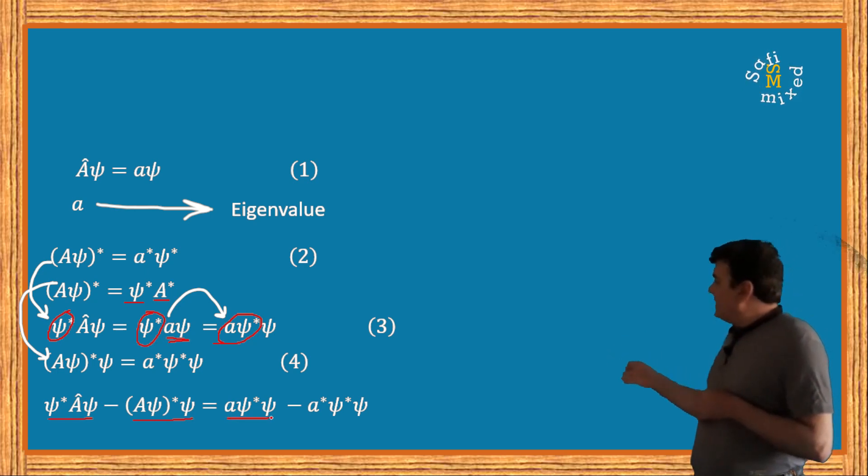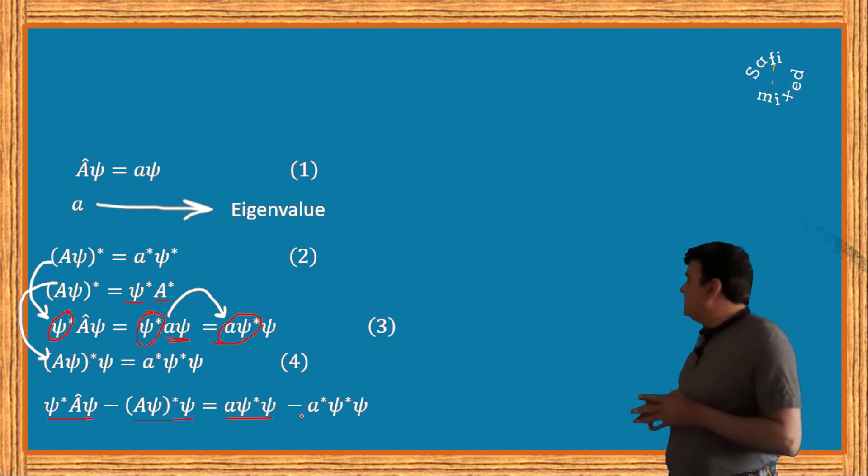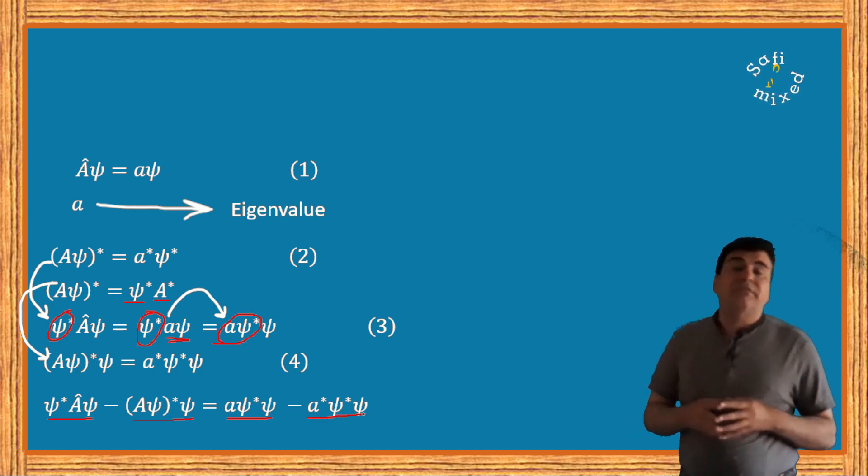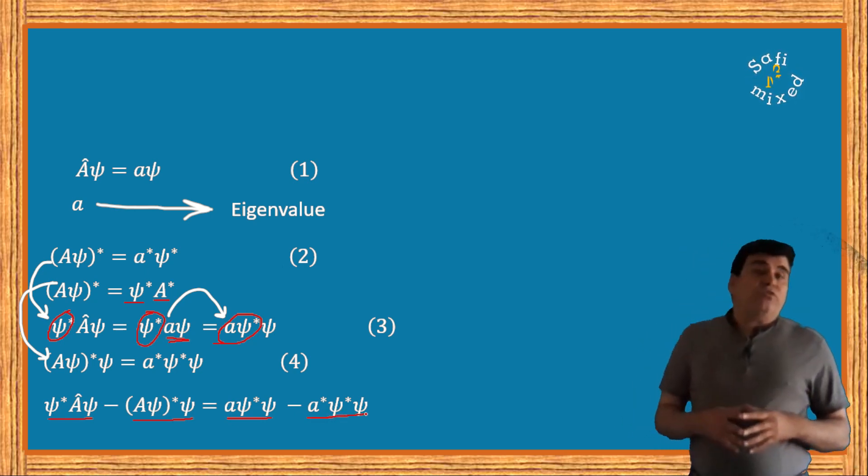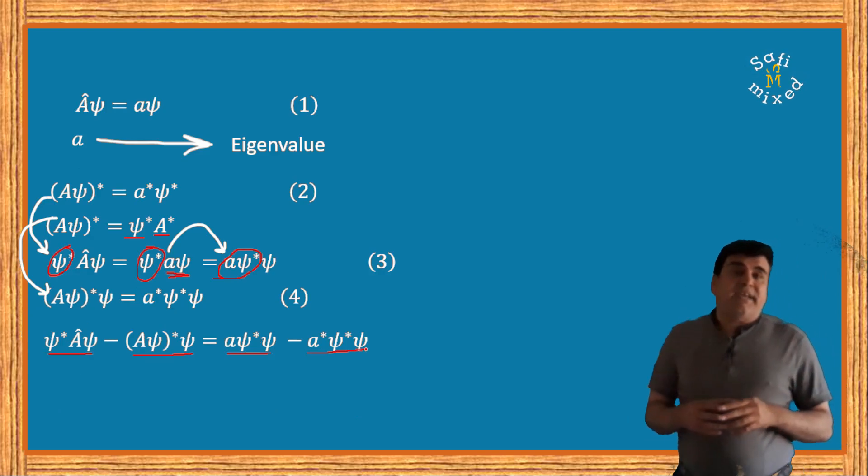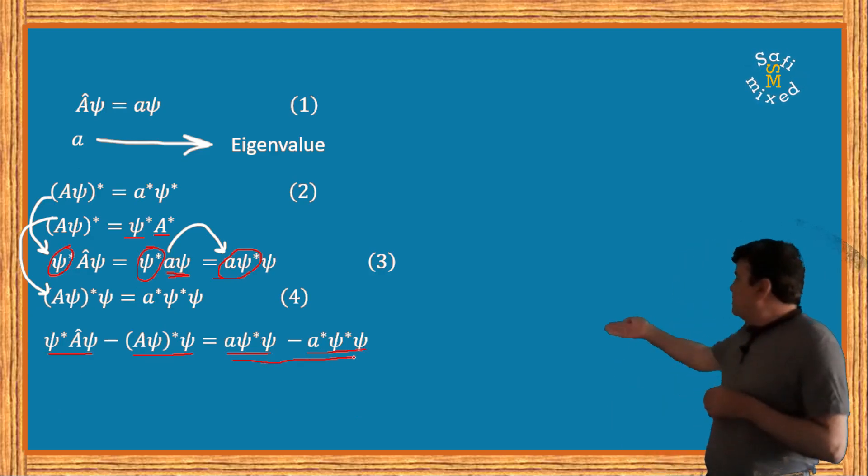To the right, the first term is the right side of equation 3 and the second term is the right side of equation 4. From the two terms on the right side I can take ψ*ψ common and put the equation into this form: (a - a*)ψ*ψ.